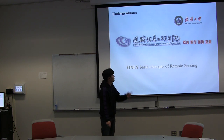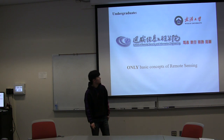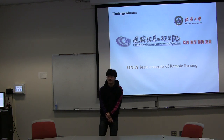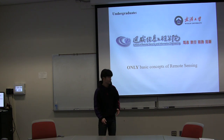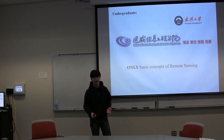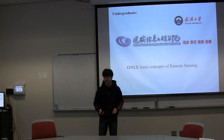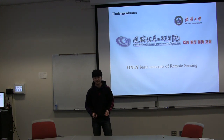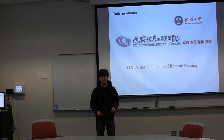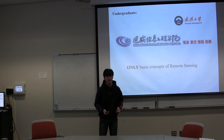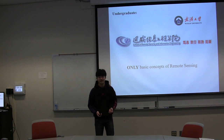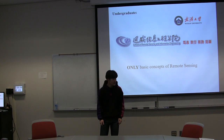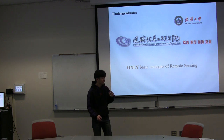Then I entered the School of Remote Sensing and Information Engineering of Wuhan University. But I only learned some basic concepts of remote sensing, because my secondary major was photogrammetry, which was required by the department for graduation. It's hard to believe that my secondary major was selected randomly — if the department has 90 students, 30 are selected to study GIS, 30 are selected to study remote sensing, and the rest have to study photogrammetry. So I was selected to study photogrammetry.